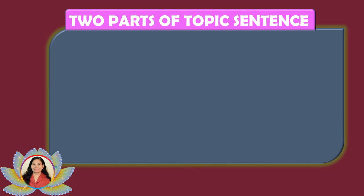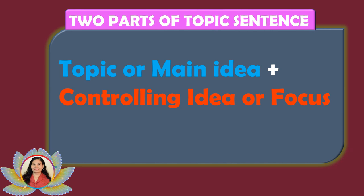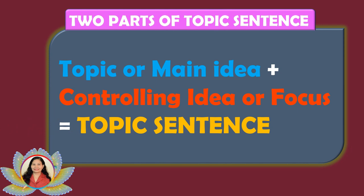A topic sentence has two parts: the topic or main idea, and a controlling idea or focus. The topic or main idea is what the paragraph is going to be about, and the controlling idea or focus explains why the paragraph is being written. The topic sentence helps readers understand the purpose of the paragraph. Each of the subsequent sentences in the paragraph develops or expounds on that point with supporting details.